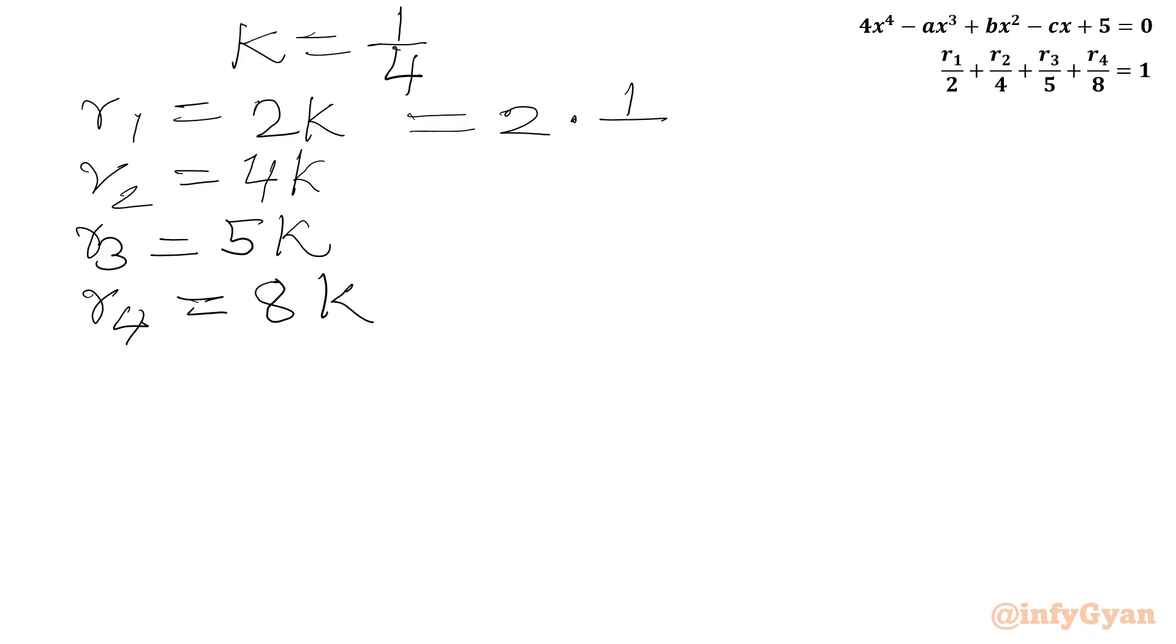Let us put k equal to 1 over 4. 2 times 1 over 4, value will be half. So R1 is half. R2 is 4 times 1 over 4, R2 will be 1. R3 is 5k, 5 times 1 over 4, value will be equal to 5 over 4. And last root R4 will be 8 times 1 over 4, value will be equal to 2.